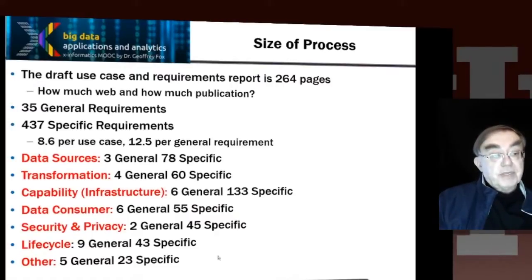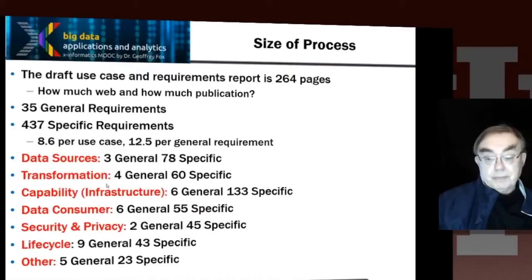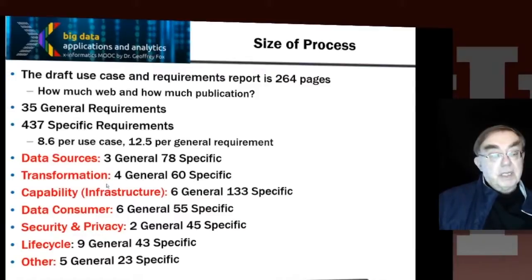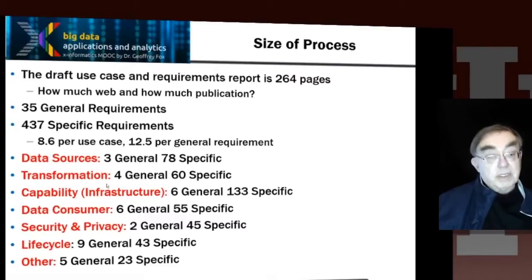Different fields of the use case template were mapped into these different requirement categories. But it was all done by a person, not automated, so the person can make a decision to violate the general rule. If you're going to do this at any greater volume than 51, you'll need to find some automatic way of doing this.